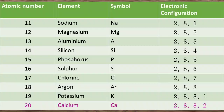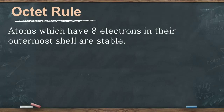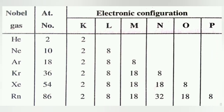Next we have the octet rule. According to the octet rule, atoms which have 8 electrons in their outermost shell are stable and they do not react with other elements. For example, all the noble gases except helium have 8 electrons in their outermost shell, so they are stable and do not react with other elements. That's why they are called inert gases or noble gases. They are also called rare gases.